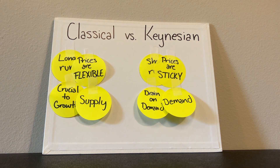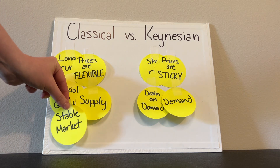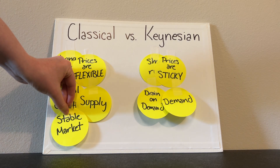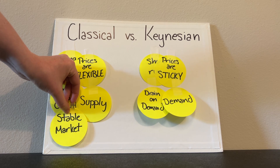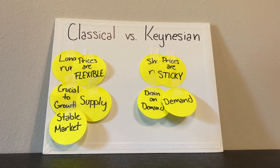The market tendency for classical economics is stable. They have a stable market and they have full employment on their side, whereas Keynesian is an unstable market.